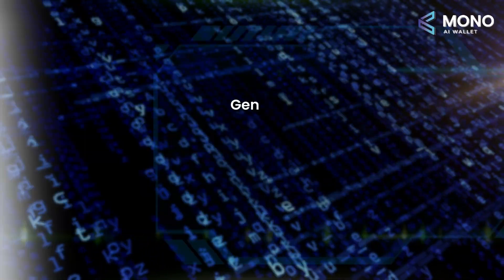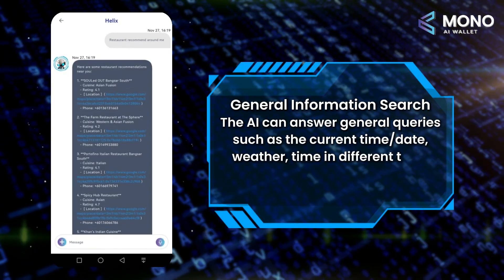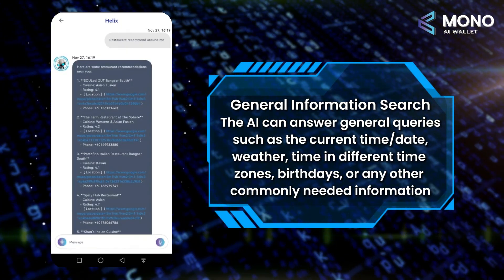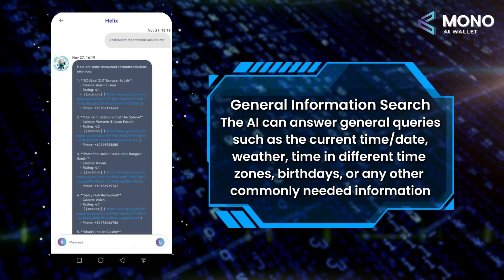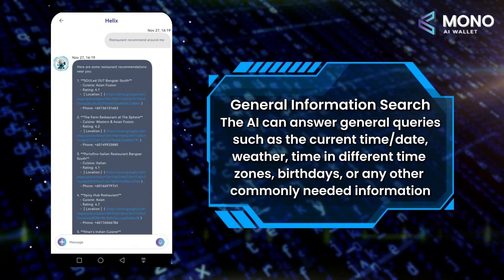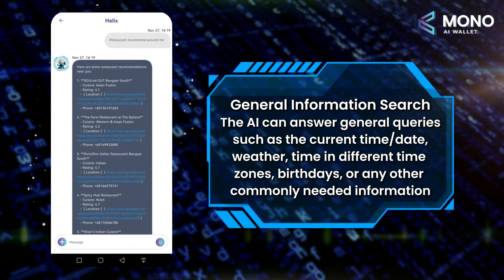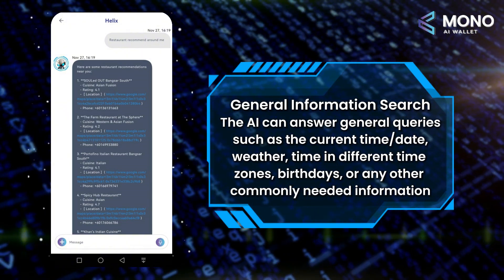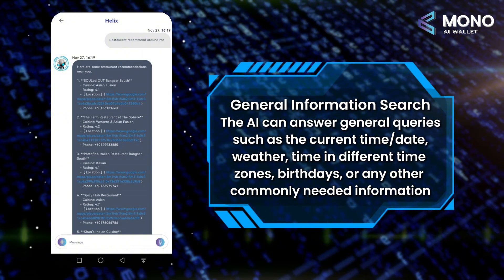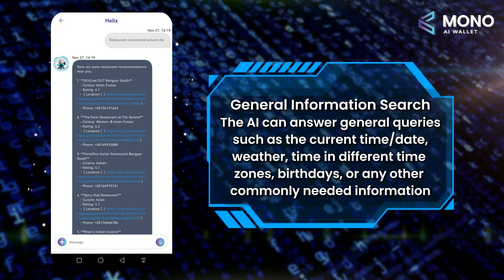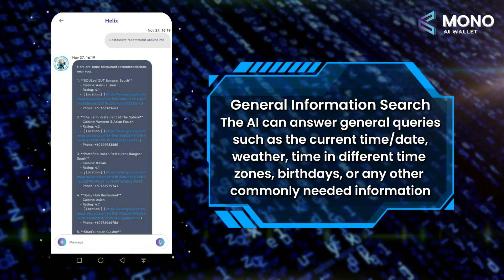Furthermore, general information search. The AI can answer general queries such as the current time or date, whether in different time zones, birthdays, or any other commonly needed information.